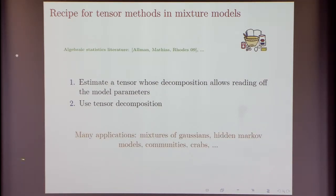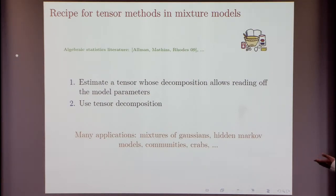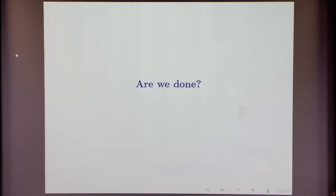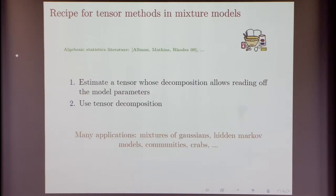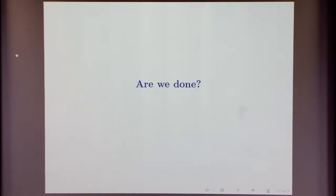This applies to many applications — for example, mixtures of Gaussians, hidden Markov models. Recently, Rong showed us about that as well. So all this sounds like a nice coherent story. But there are actually two big caveats.